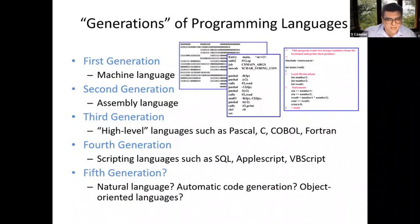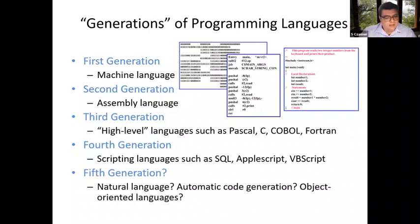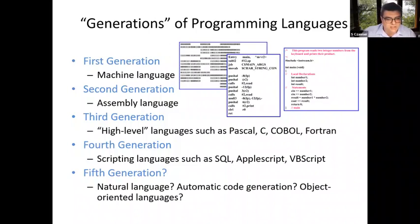Do we have a fifth generation of programming languages, or what could be next? Could it be natural language — where we speak in free English and the computer understands what we need it to do? Or is there automatic code generation? We have, of course, object-oriented languages and so on. Those are questions that go slightly beyond the content of this talk, but they are good to start thinking about.